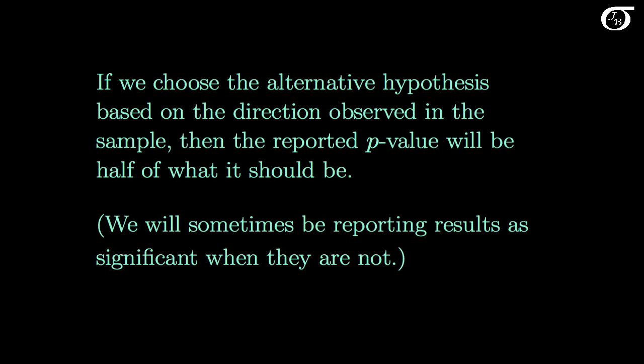It's a similar notion if we use the p-value approach. If we choose the alternative hypothesis based on the direction observed in the sample, then the reported p-value will be half of what it should be. We will be overstating the amount of evidence against the null hypothesis, and we will sometimes be reporting results as significant when they are not.